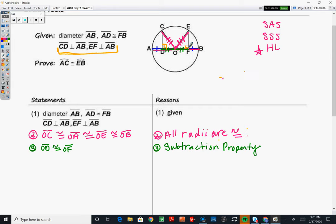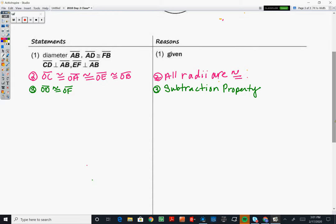And then also number two, EF is perpendicular to AB. So step four is that angle one and angle two are right angles. The same reason we've been using all year is that perpendicular lines intersect to form right angles.